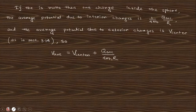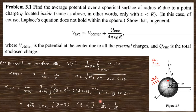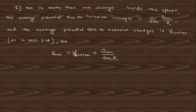If there is a total enclosed charge q_enclosed, by superposition theorem this becomes the total enclosed charge contribution. For the external charges, their potential equals the potential at the centre, which is the average value discussed in this section. So the total average potential is: potential at the centre due to external sources plus q_enclosed/(4π ε₀ r) for internal sources.